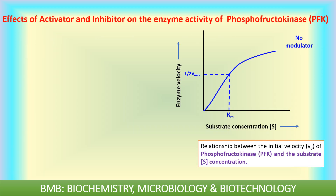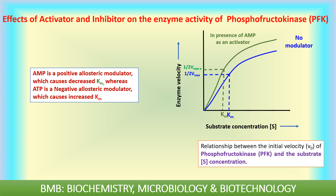This is the graph of initial velocity of phosphofructokinase versus substrate concentration. The effects of activator and inhibitor on enzyme activity of phosphofructokinase can be seen here. AMP is a positive allosteric modulator and causes a decreased Km value, whereas ATP is a negative allosteric modulator and causes an increased Km value. So we can see that the activator decreases the Km value whereas the inhibitor increases the Km value.